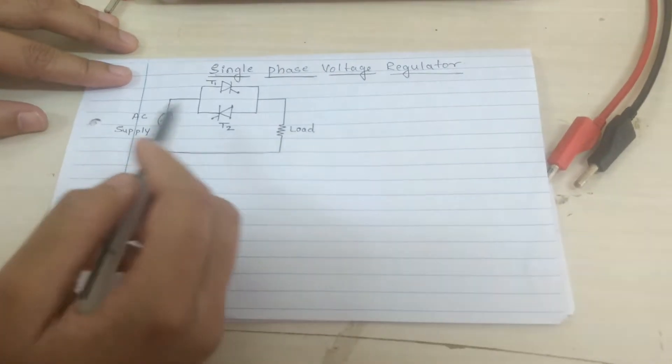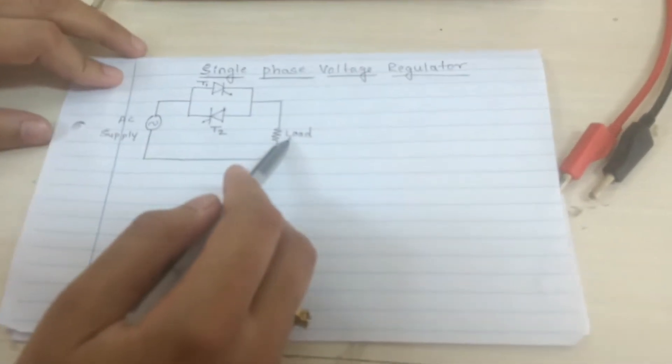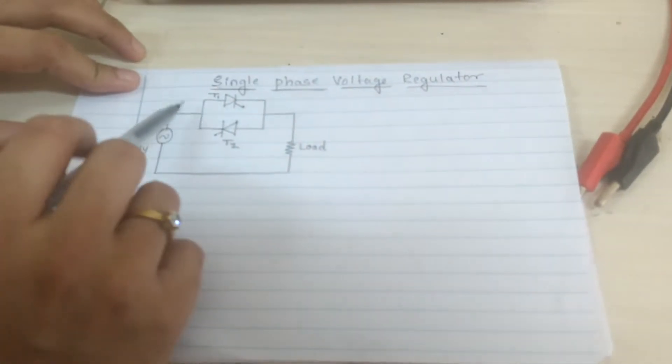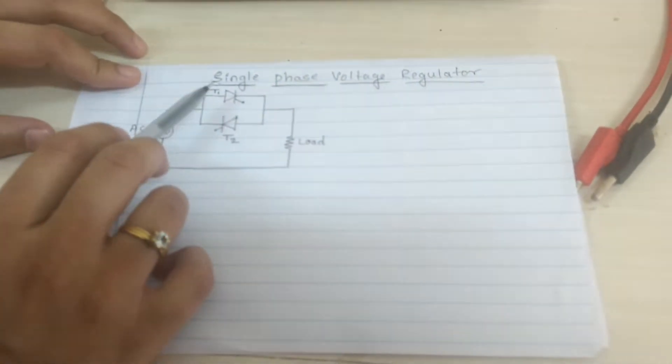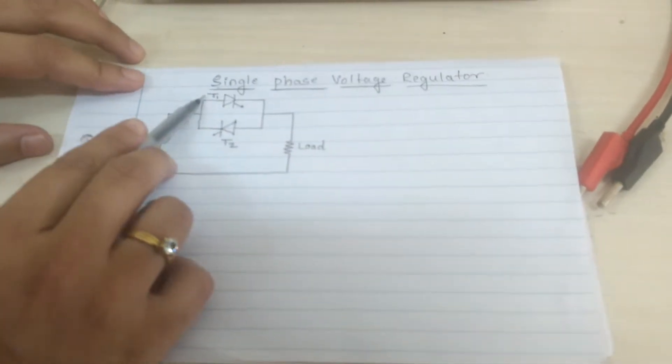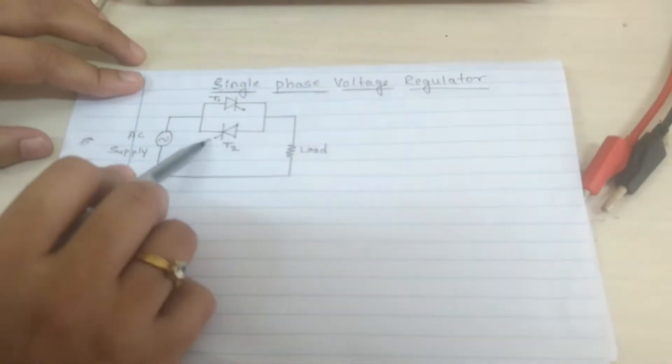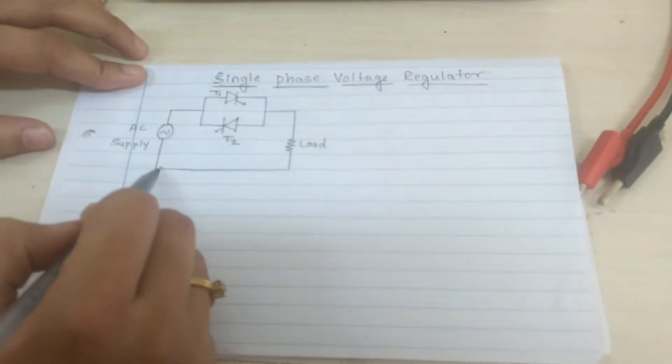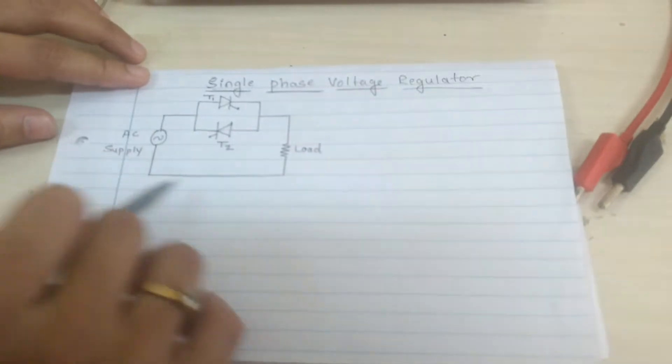So to convert from fixed AC to variable AC, we will use the triac arrangement. That is, we connect two SCRs in the anti-parallel configuration - T1 and T2 connected in anti-parallel. So this configuration is connected to the load and to the supply. This is the circuit diagram.